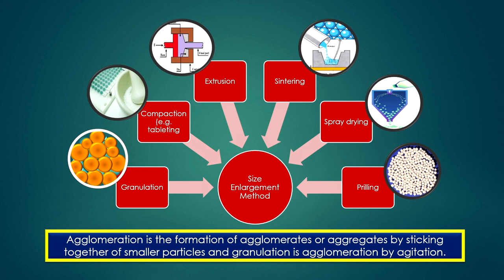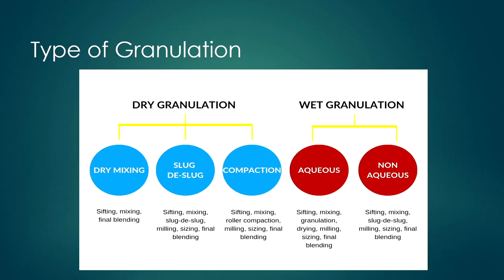There are several methods available for the granulation process, including compaction, extrusion, sintering, spray drying, and prilling. As shown in this slide, several methods follow for granulation: compaction, prilling, spray drying, sintering, and extrusion. For the granulation process itself, there are basically two types: dry granulation and wet granulation.